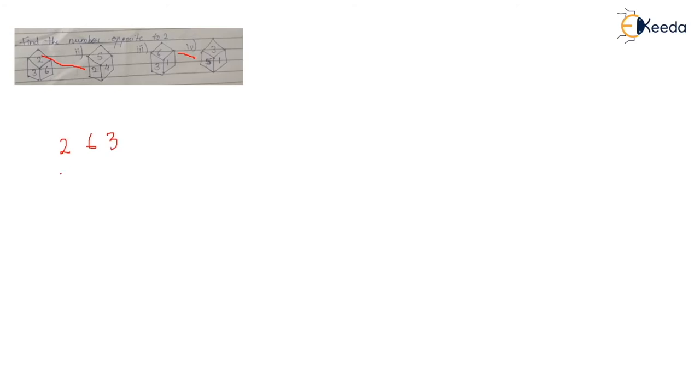Let's see this question: find the number opposite to two. Here there are four dices. You have to see the dices which have only one face common. After checking, this dice has one common face, this one has no face common, and this one has one face common. So you can use either of these two dices — the answer won't change. Moving clockwise: two, six, three — and two, five, four. So the opposite of two will be one. You can check from here also: one, three, six and one, five, three — opposite of one is two.